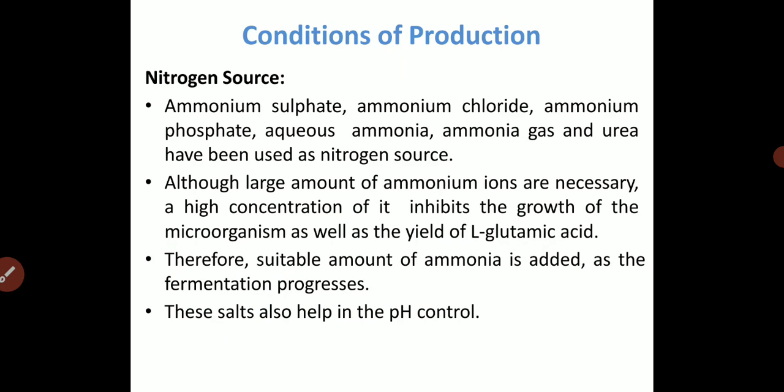Nitrogen source is very important for any fermentation process — for microorganism multiplication, DNA duplication, and cellular component duplication. The nitrogen source can be supplemented with ammonium sulfate, ammonium chloride, ammonium phosphate, aqueous ammonia, ammonia gas, or urea. Although large amounts of ammonium ions are necessary, a high concentration inhibits the growth of the microorganism as well as the yield of glutamic acid. Therefore, a suitable amount of ammonia should be added as fermentation progresses, and these salts also help in controlling the pH level.